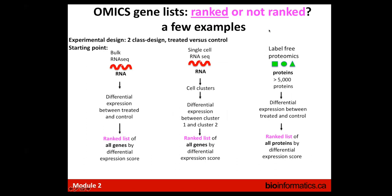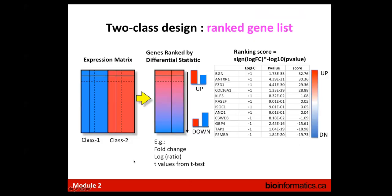Here are three examples where it is easy to get a ranked gene list. First, bulk RNA-seq: a classic two-groups design where you have control and treated, do differential expression, and rank all genes from top up-regulated to down-regulated. Similarly with single-cell RNA-seq: get your cell clusters, do cluster one versus all or cluster one versus cluster two, then rank all genes from top up-regulated to down-regulated. It is also possible with label-free proteomics if you get a sufficient number of proteins.